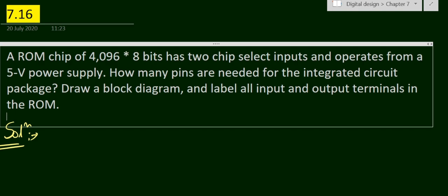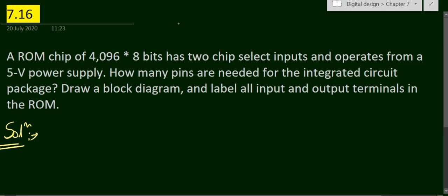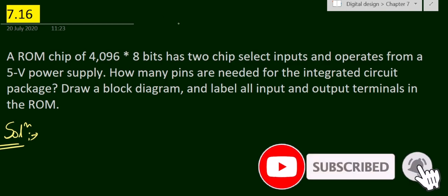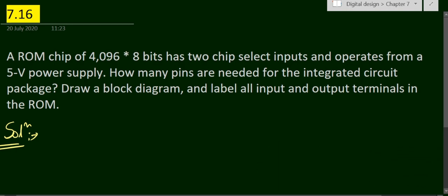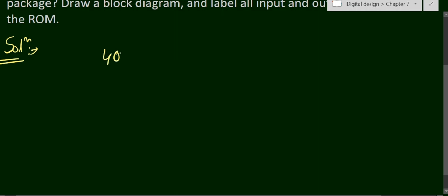In this video we will see problem number 7.16 from chapter number 7. The problem is: a ROM chip of 4096 into 8 bits has two chip select inputs and operates from a 5-volt power supply. How many pins are needed for the integrated circuit package? First we have to find how many pins are needed, and we have to draw the block diagram and label all the input and output terminals in the ROM.